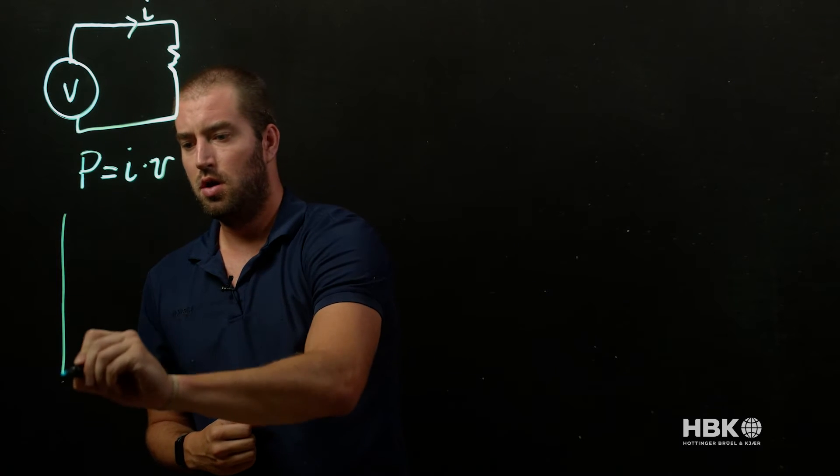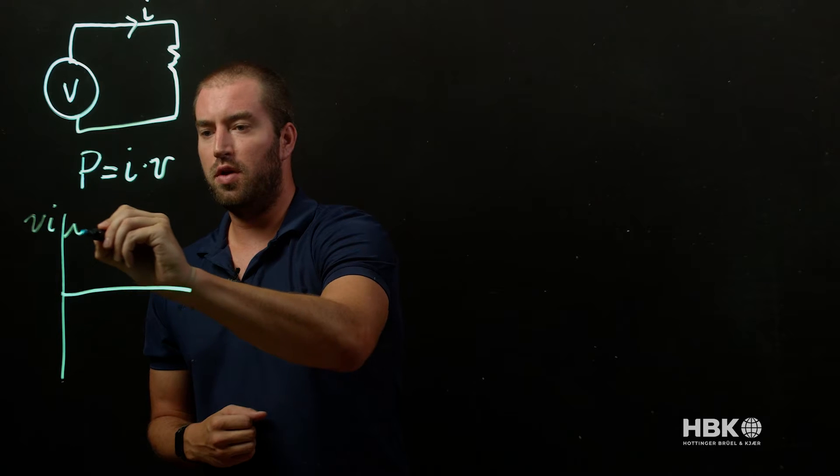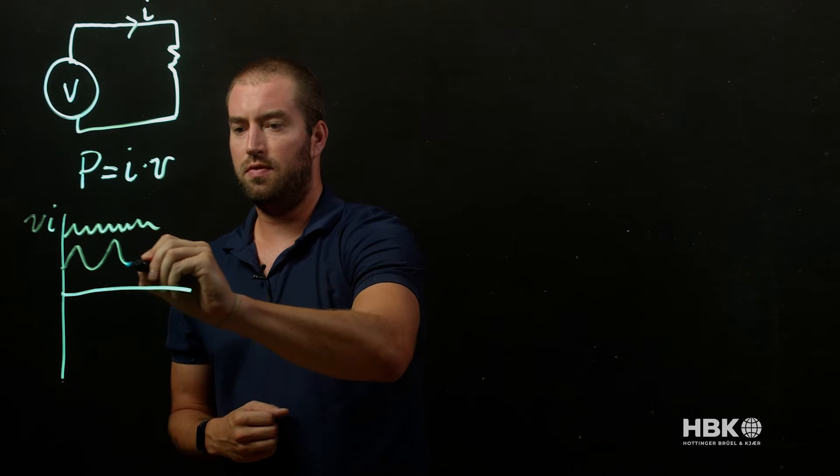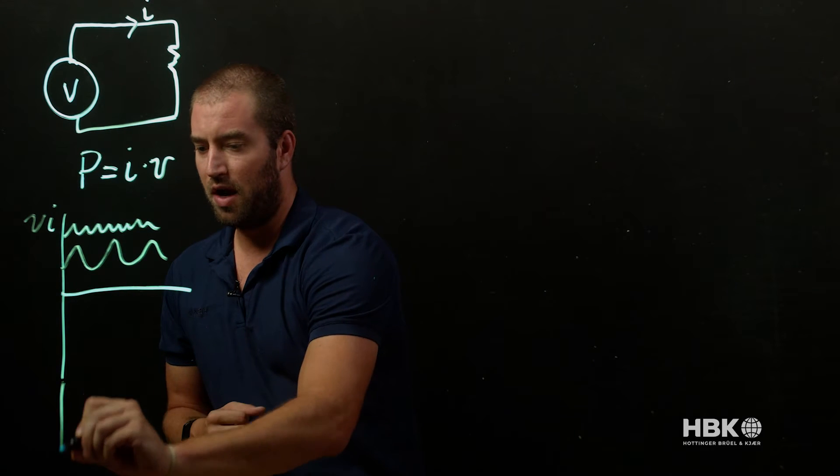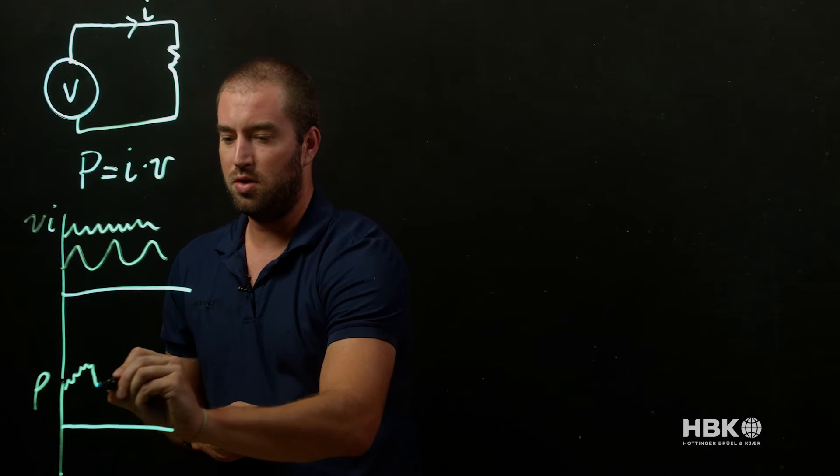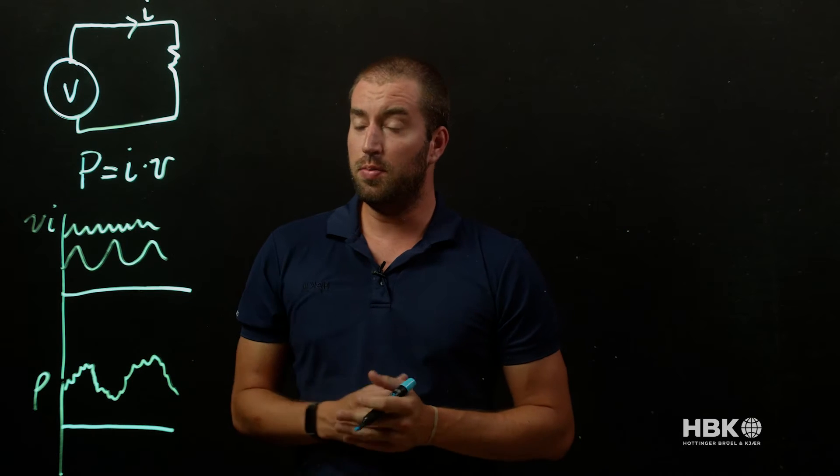But what if our voltage and current are moving around? We have a voltage that has a ripple on it. We have a current that maybe ebbs and flows. What is our power going to look like? And our electric power ends up following this multiplication. And we get this value that has peaks and valleys and ripple to it.